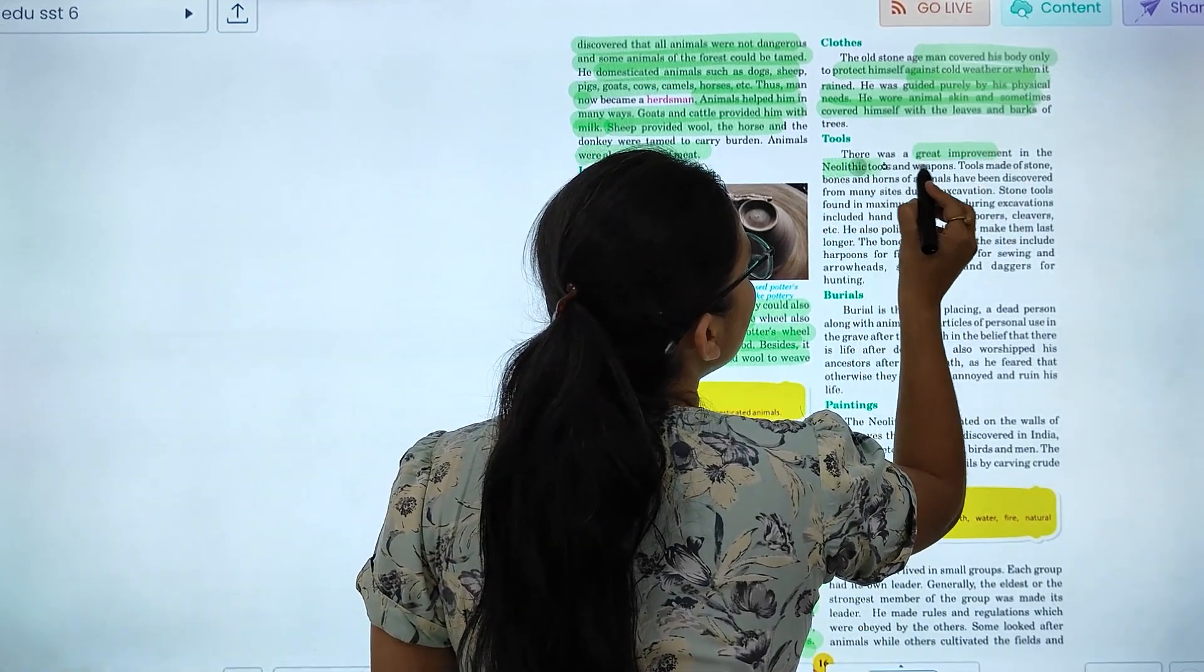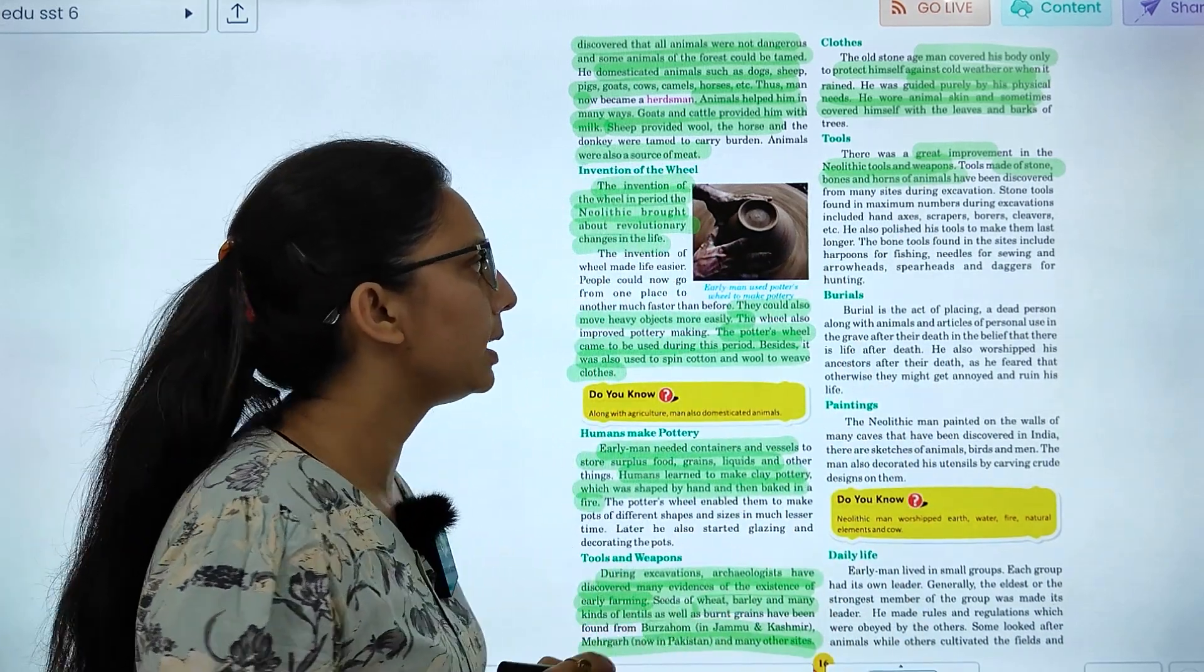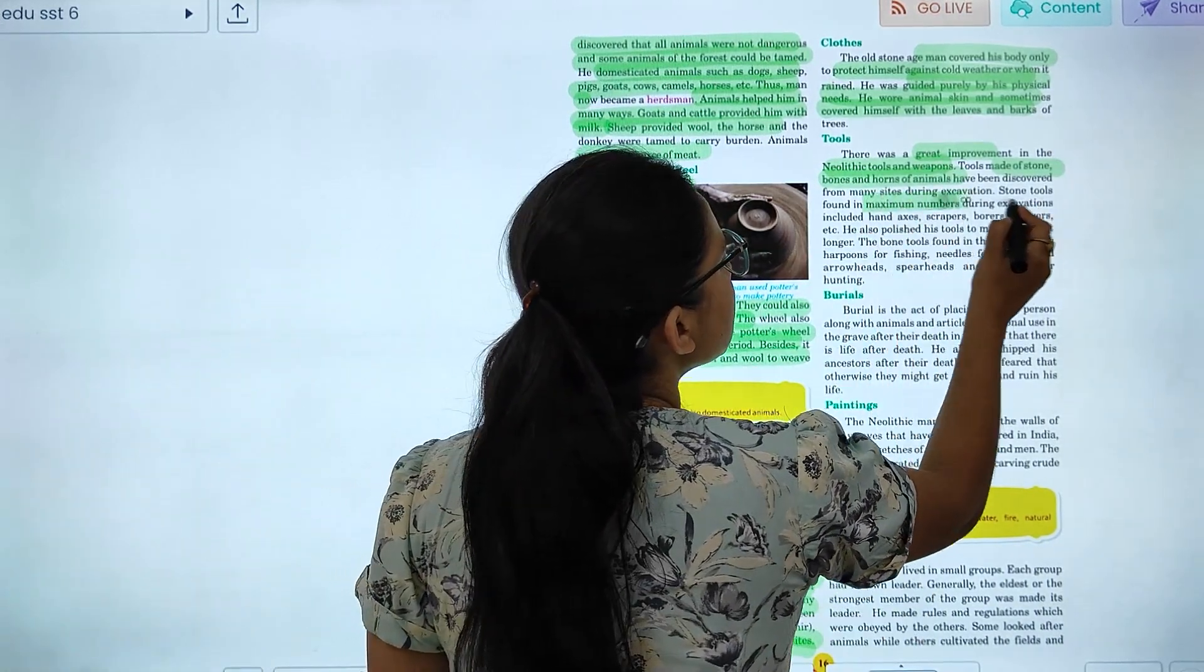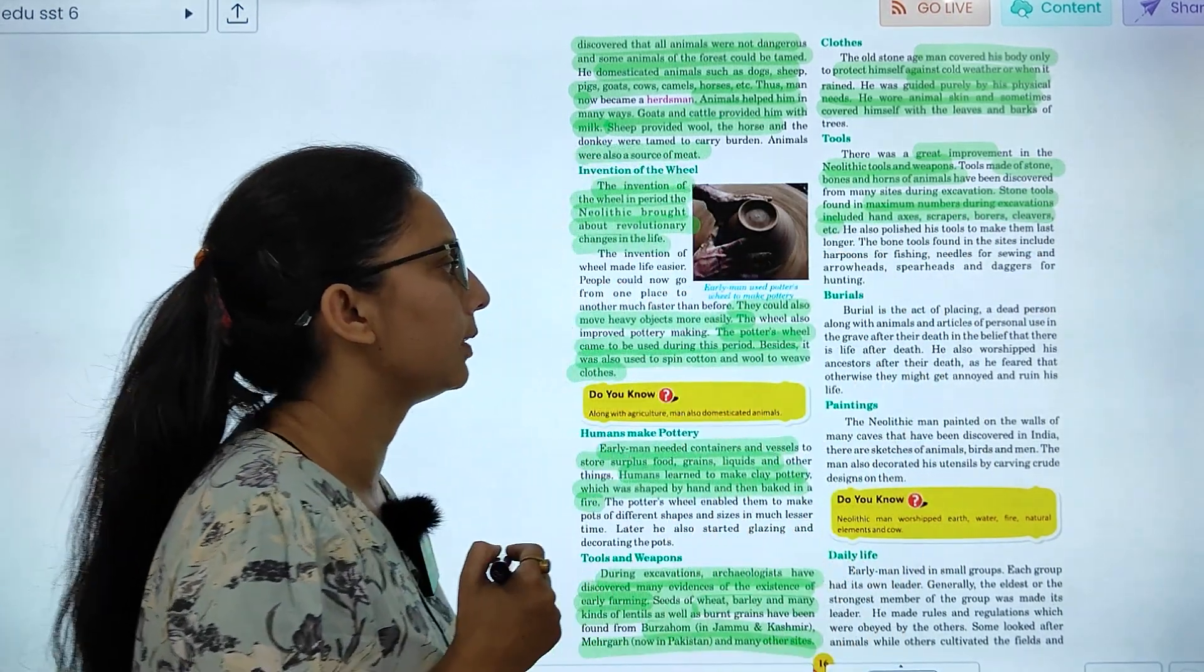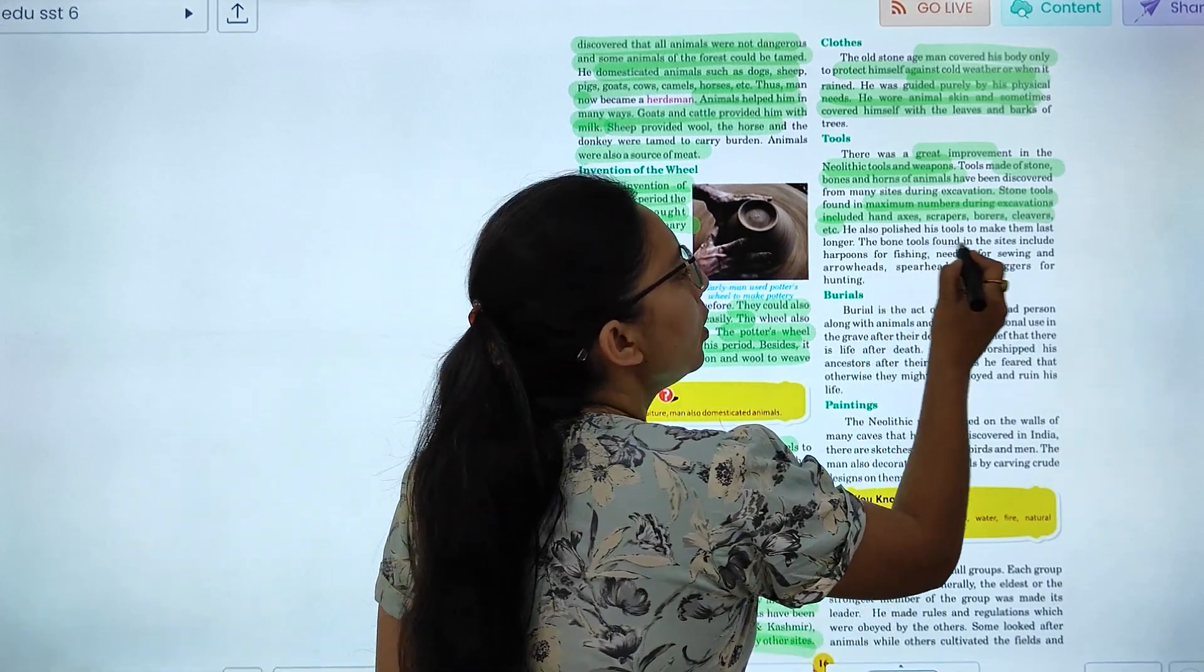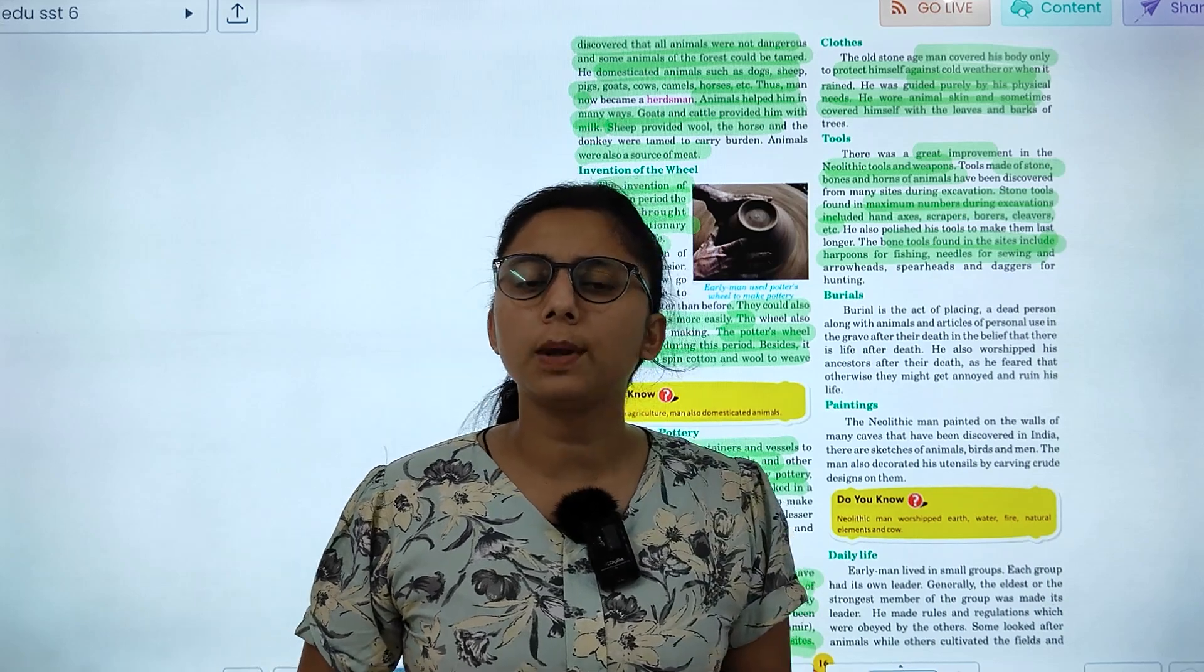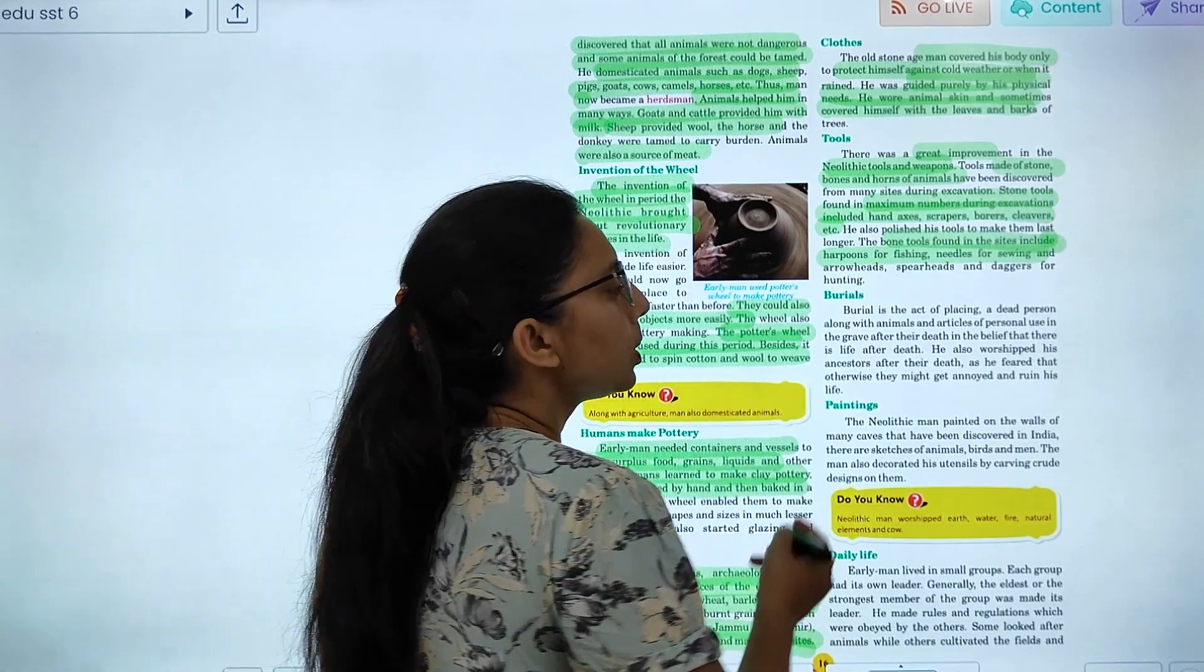Great improvement in thick tools and weapons. Tools are like stone, bones, and horn of animals. During the excavation, stone tools, there are maximum numbers. There are axes, scrapers and blades. They used some polished tools. And the bone tools found in these sites include bones for fishing, needles for sewing, and arrowheads, spearheads and daggers.